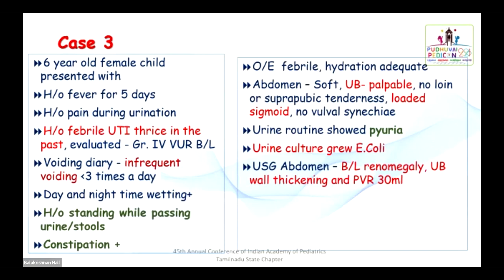On examination, the child is febrile but hydration is adequate. Urinary bladder is palpable. She also has a loaded sigmoid. Urine routine showed pyuria and urine culture is growing E. coli. Ultrasound showed bilateral renomegaly with urinary bladder wall thickening and significant post-void residue of 30 ml. This is recurrent urinary tract infection in a child with bowel-bladder dysfunction. The second episode of UTI is called recurrent UTI.